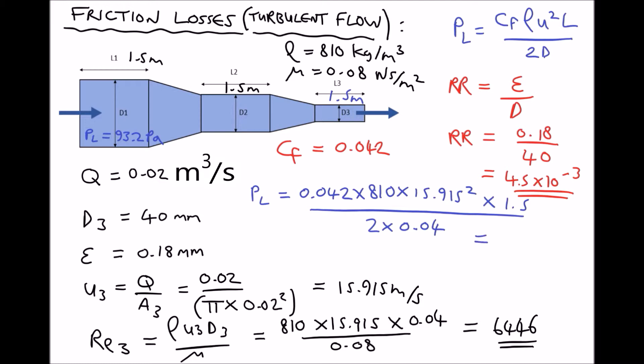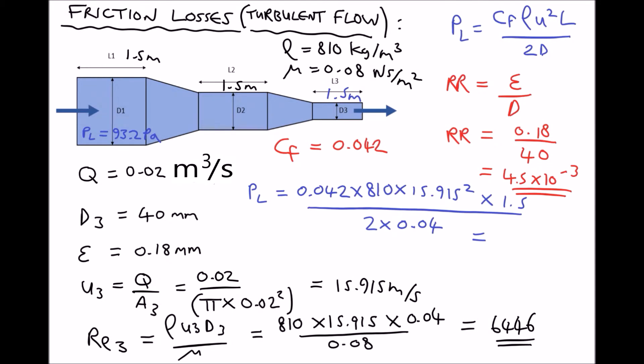Now, running that through the calculator gives us a pressure loss equal to 161,566. So converting that to kilopascals, we have 161.6 kilopascals. So when we compare that pressure loss of 161.6 kilopascals with the pressure loss in the first section of the duct of 93.2 pascals, we can see that the pressure losses associated with turbulent flow and higher flow velocities are much greater than the pressure losses due to laminar flow and slower fluid velocities. Fluid velocity has a huge impact on the amount of pressure loss due to friction.